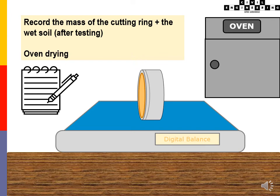Record the mass of the cutting ring with the wet soil after testing and then transfer it into the oven for drying.